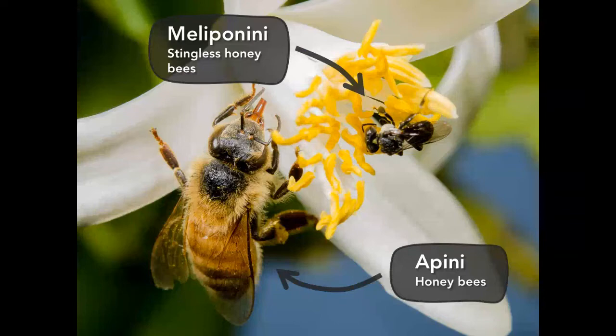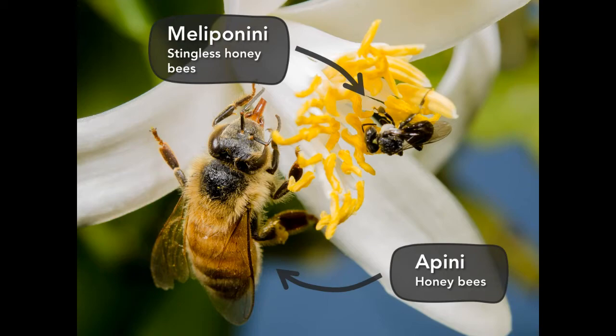These are the bees we all think about — queens, honey, workers — but they're actually a very small component of overall global bee diversity. The two groups are the Apini, the honey bees, and the Meliponini, the stingless bees. Despite having so many similarities as highly eusocial social bees, they've got some fundamental differences as well.